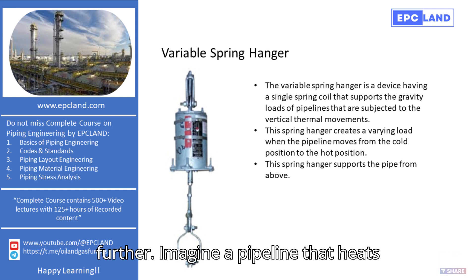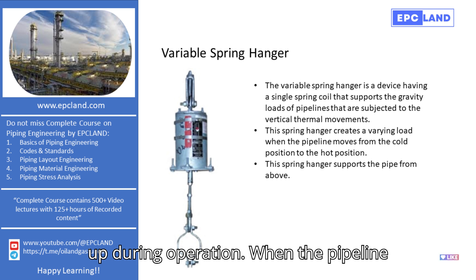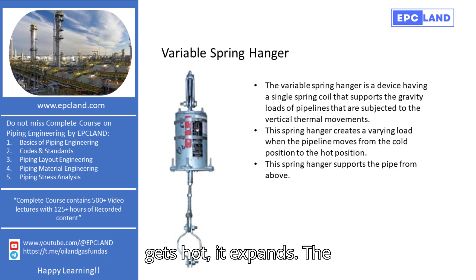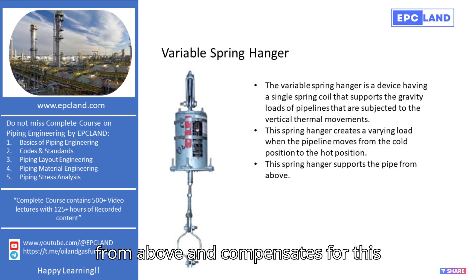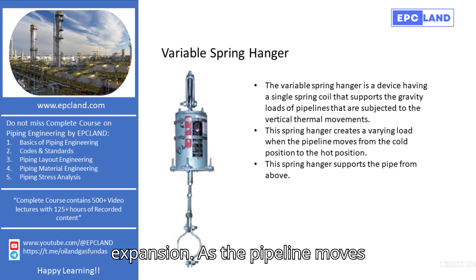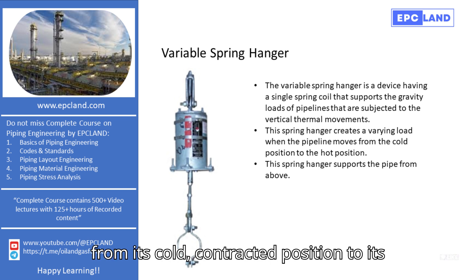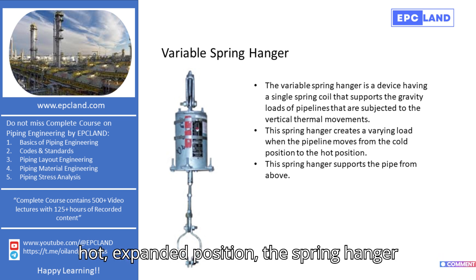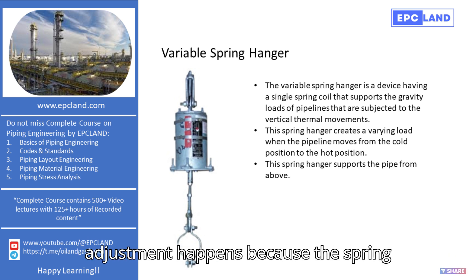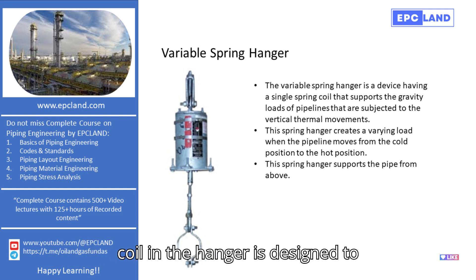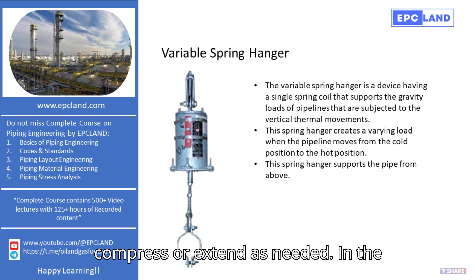Imagine a pipeline that heats up during operation. When the pipeline gets hot, it expands. The variable spring hanger supports the pipe from above and compensates for this expansion. As the pipeline moves from its cold, contracted position to its hot, expanded position, the spring hanger adjusts its load accordingly.